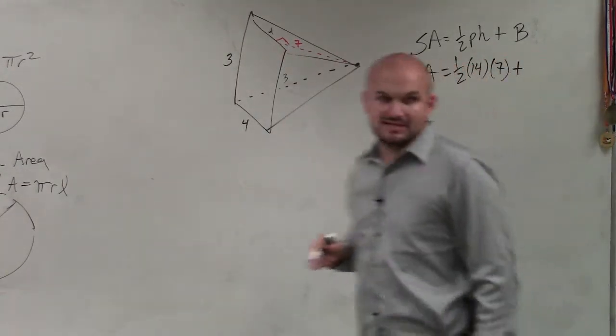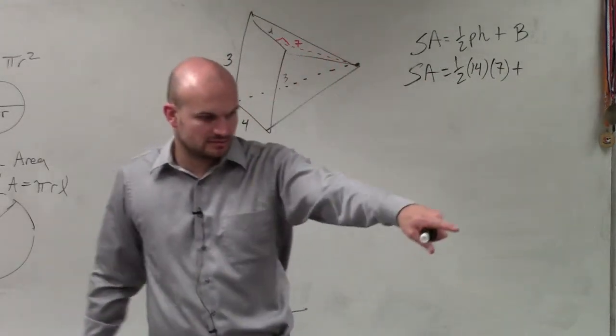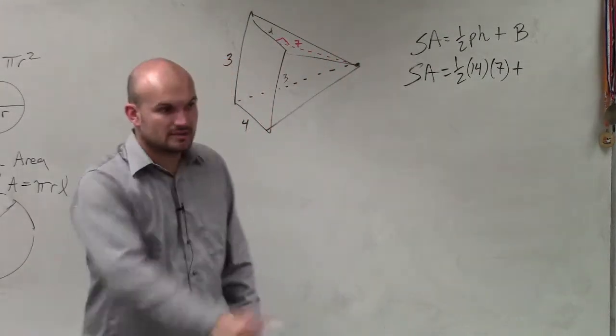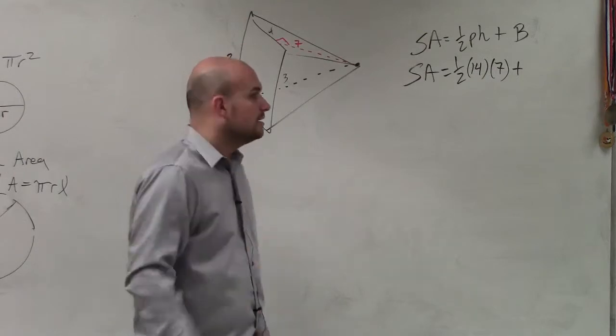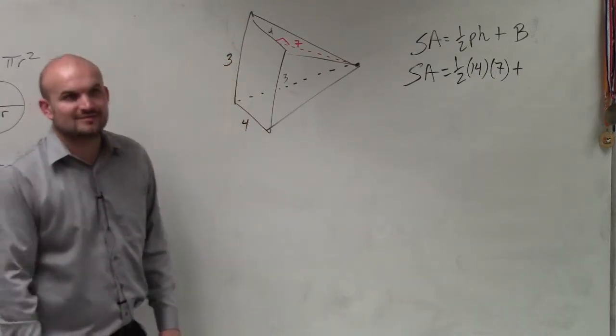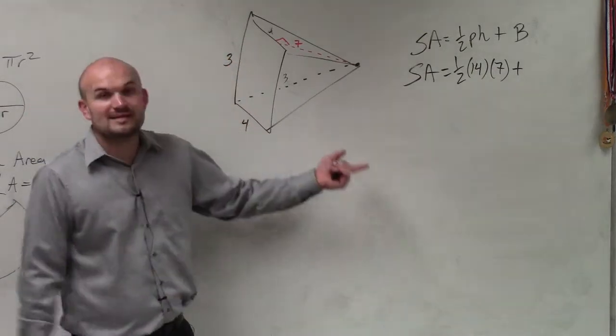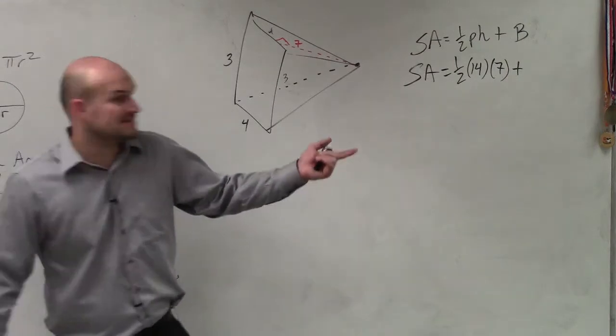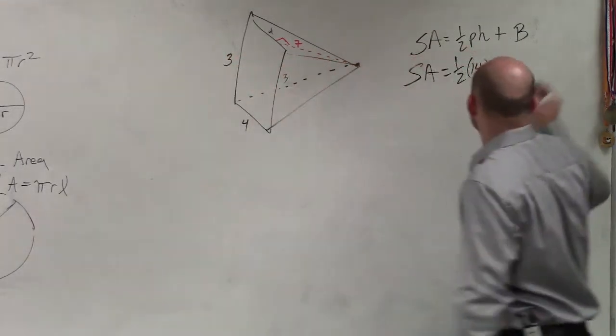So we notice this is a rectangle. You can just go through that way. Since it's a rectangle, we know that to find the area, it's just going to be base times height, which in this case will be 3 times 4.